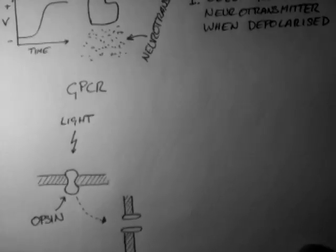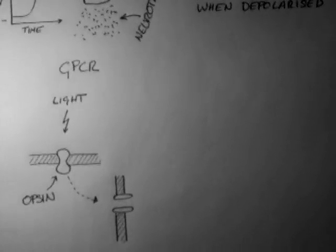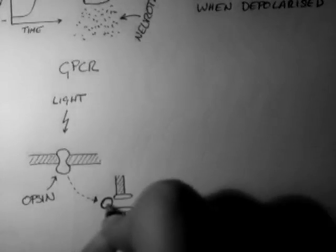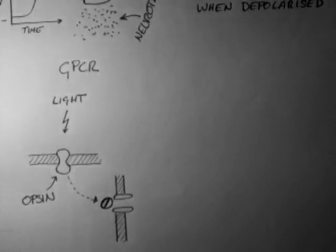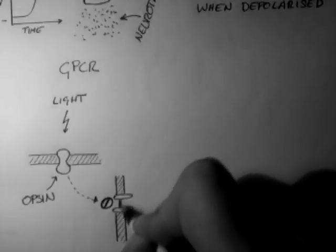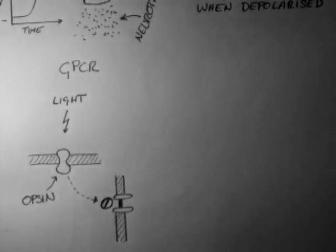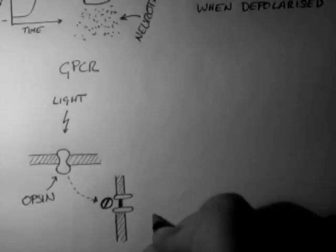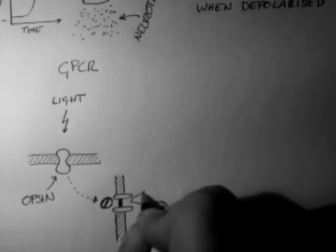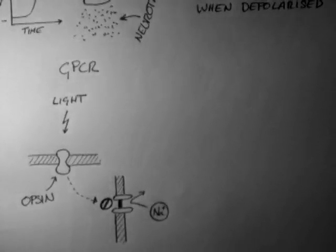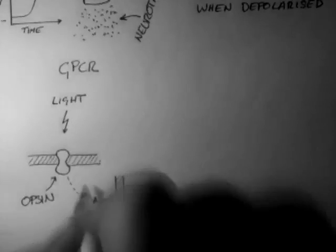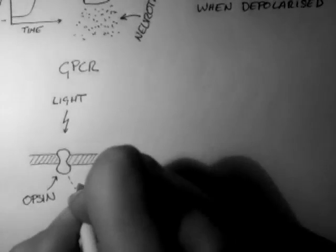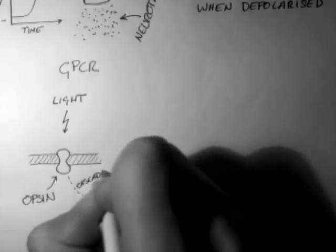So when light hits this opsin, it closes this sodium channel. This means that sodium, these sodium ions trying to get into the cell can't. I should say that this is a cascade of events, not just one single event.